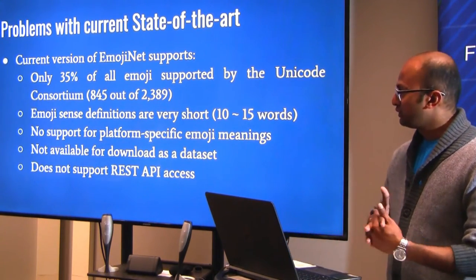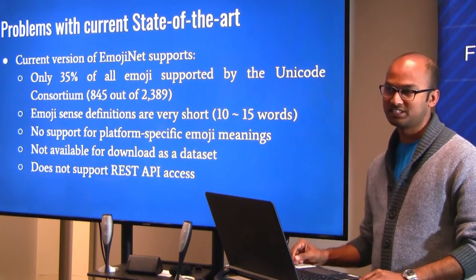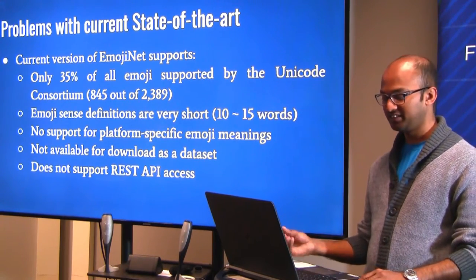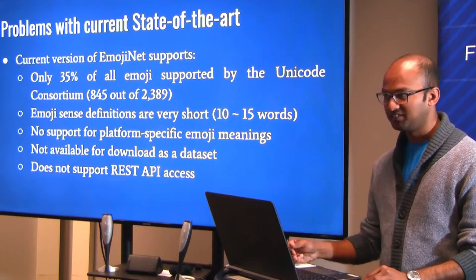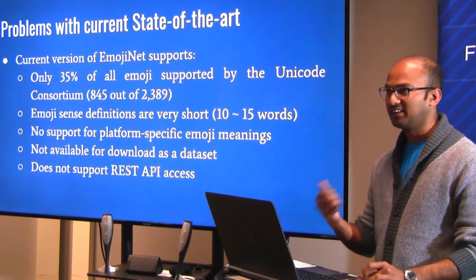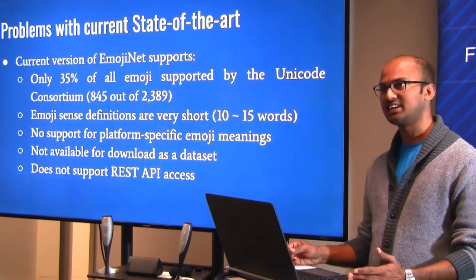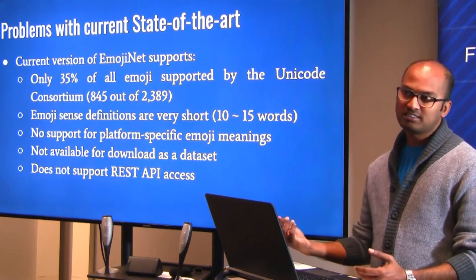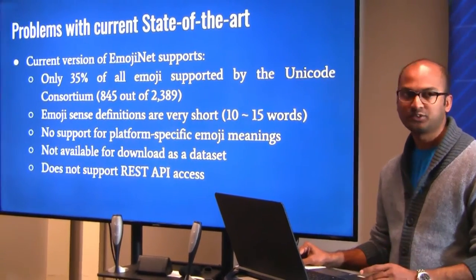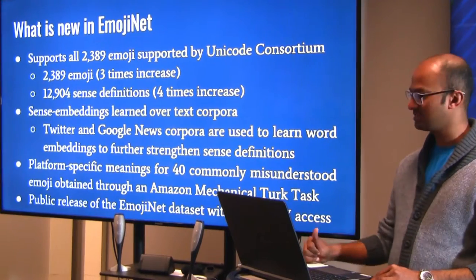Before going into the details, let's see why we wanted to do this study. The only EmojiSense inventory we have is the previous EmojiNet version we released, which covers 35% of all Emoji supported by the Unicode Consortium. The other Emoji definitions come directly from BabelNet, so the EmojiSense definitions are very short. We did not support platform-specific meanings of Emojis, and it was not released as an open service or open dataset. Those are the things we wanted to address in this version.